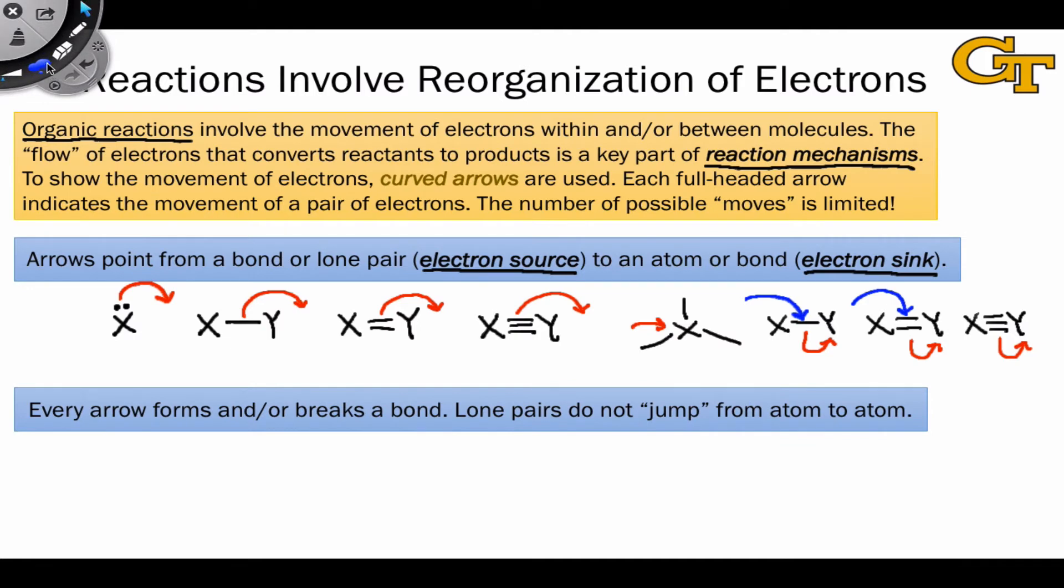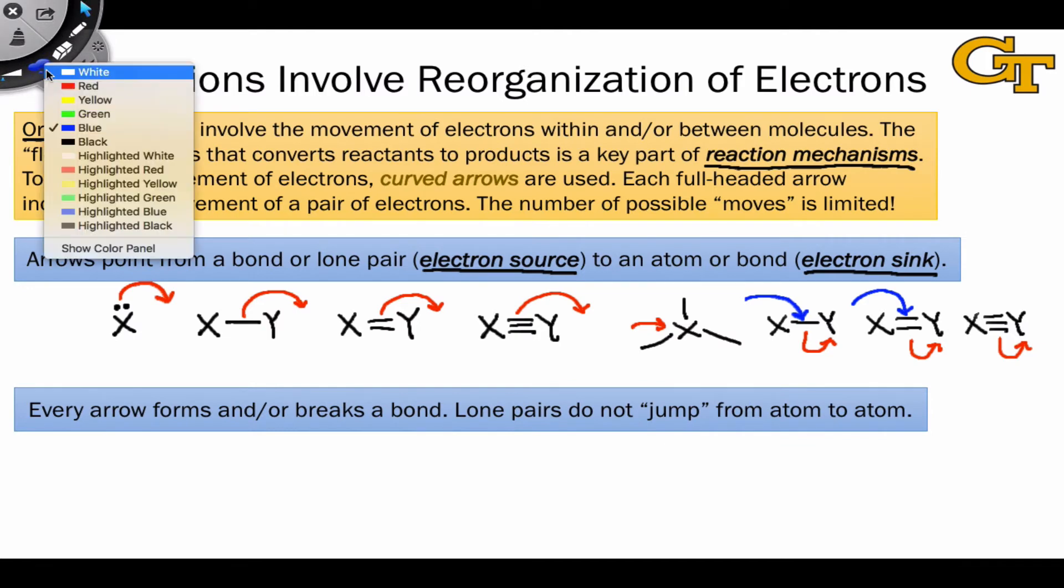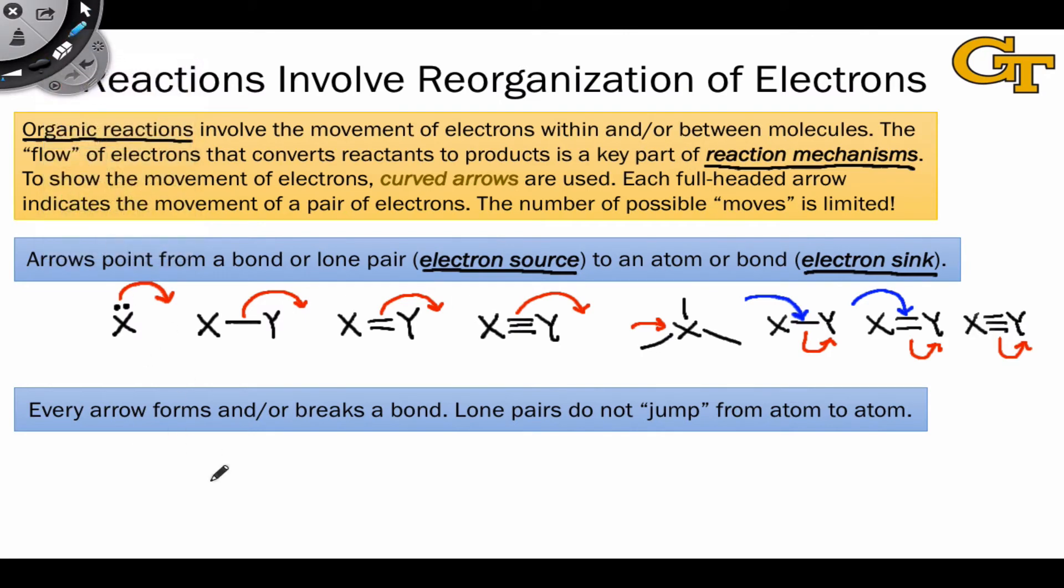Every arrow that you draw either forms or breaks a bond. Lone pairs don't jump from atom to atom. So, an example of what not to do might be something like this.